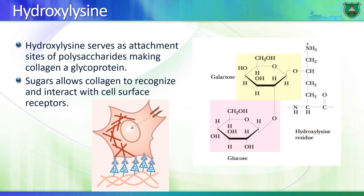How about hydroxylysine? The main purpose of hydroxylysine is to attach sugars to it — sugar residues like galactose and glucose — making collagen a glycoprotein. These sugars provide linkage points between collagen and cells: receptors on the cell surface can interact with collagen molecules in the matrix via these sugar molecules, though the interaction can also involve amino acids as well.